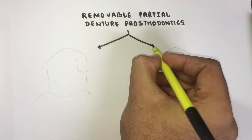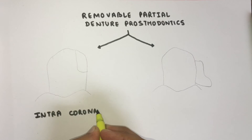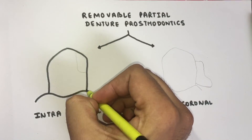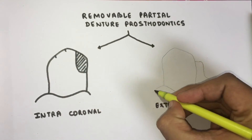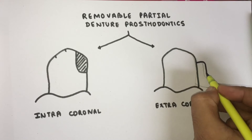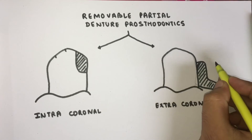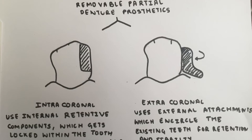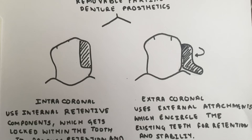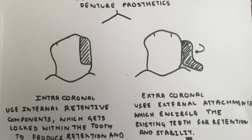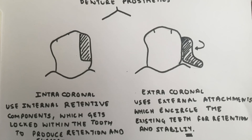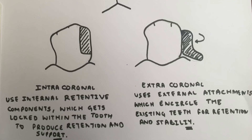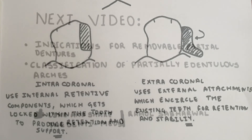The two types are intracoronal and extracoronal. In intracoronal, the partial dentures use internal retentive components which get locked within the tooth to produce retention and support. Whereas extracoronal partial dentures use external attachments which encircle the existing tooth structure for retention and stability.